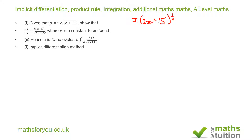Now we can apply the product rule, differentiating the term involving 2x plus 15. We bring down the power of one half, so we write one half first. Reducing the power: one half minus one gives minus one half. So that becomes 2x plus 15 to the power of minus one half, which is the reciprocal of the square root of 2x plus 15.